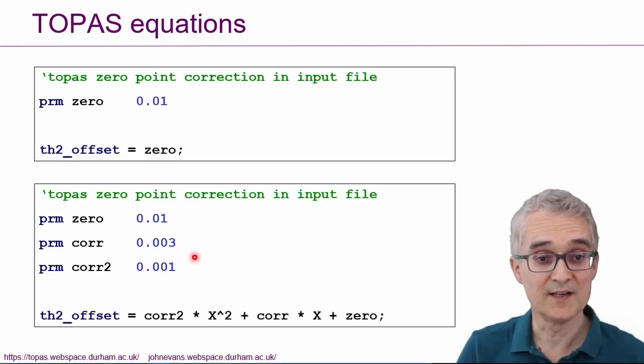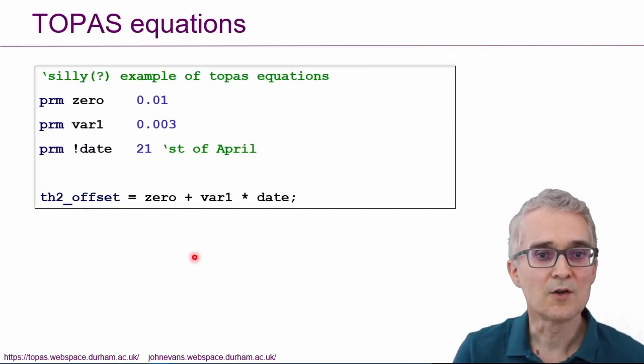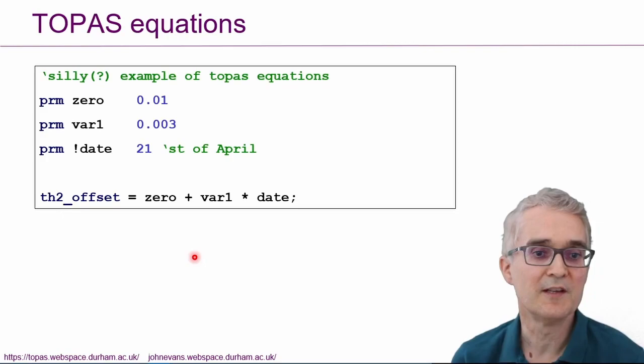And then these would be parameters that you can refine from your diffraction data to calibrate the experiment. So that's a very straightforward example of something you could do with equations. You could think to yourself, well, I want to do something even more wacky. You could say to yourself that you think for your particular diffraction experiment, for some reason, the 2θ offset depends on the day of the week.